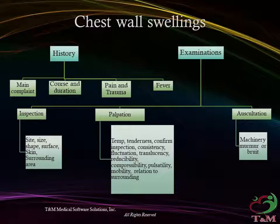The six cardinal signs of inspection include: sight, size, shape, surface, skin, and surrounding area. Palpation should include data for temperature, tenderness, confirmation of inspection findings, consistency, fluctuation, translucency, compressibility, pulsatility, mobility, and the relation to surrounding structures. Auscultation findings should also be noted.